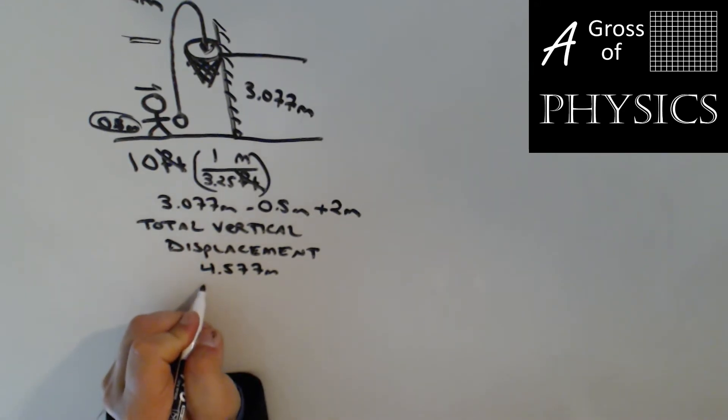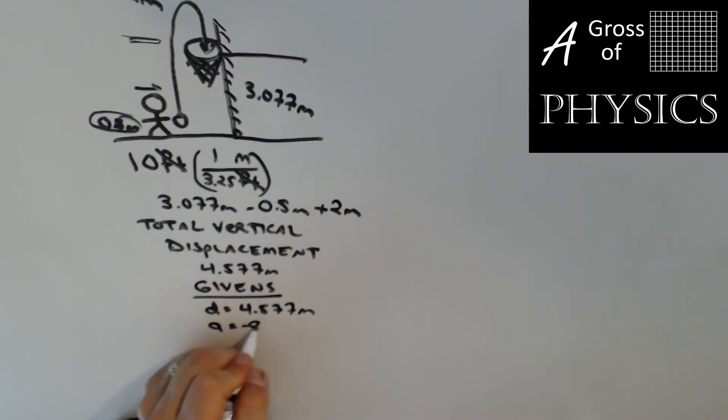So what I'm going to do to find the initial velocity: I'm going to use displacement is 4.577 meters, acceleration is negative 9.8 meters per second squared.